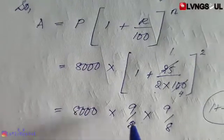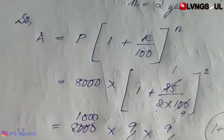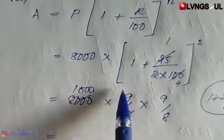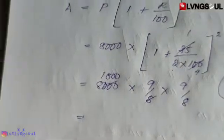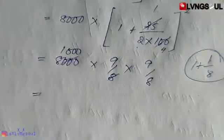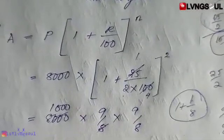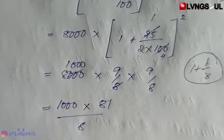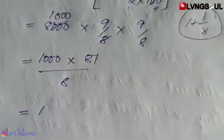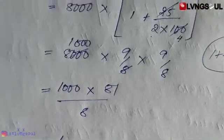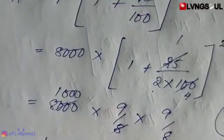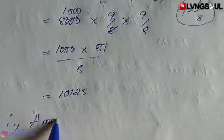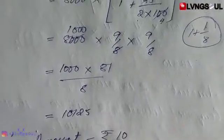So 8,000 into 9/8 squared. Calculation gives 10,125. Therefore amount is equal to rupees 10,125.